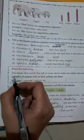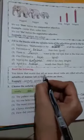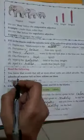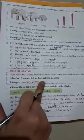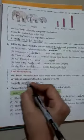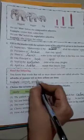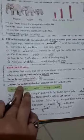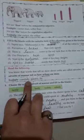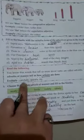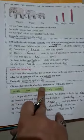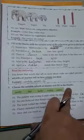Read the following: You know that words that tell us more about verbs are called adverbs. The adverbs of manner tell us how actions are done. Example is carefully, quickly.